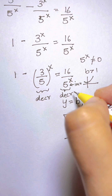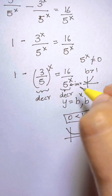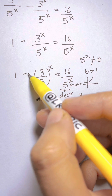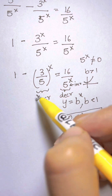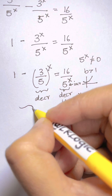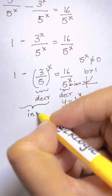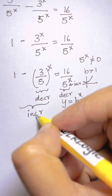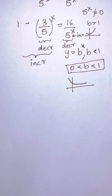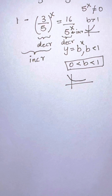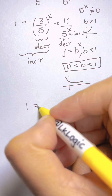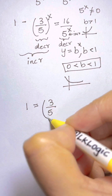So we have a decreasing function on the left side. If you multiply a decreasing function by negative 1, it becomes an increasing function — so 1 minus (3/5)^x is increasing. Now let's bring (3/5)^x to the other side, giving us 1 equals (3/5)^x plus 16 over 5^x.